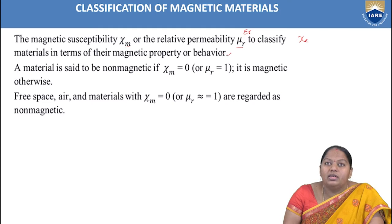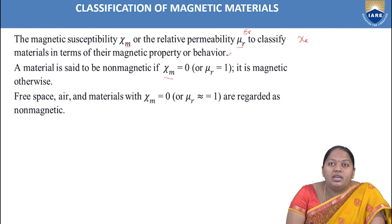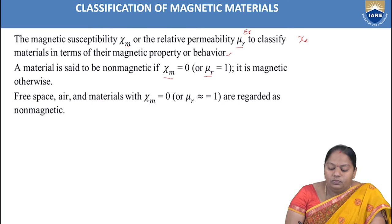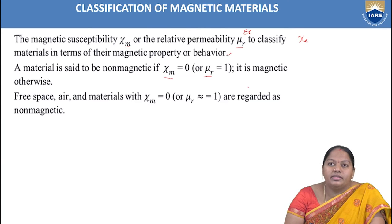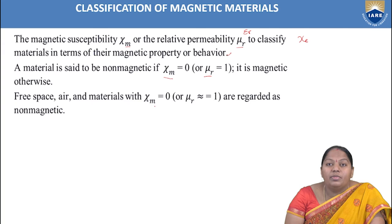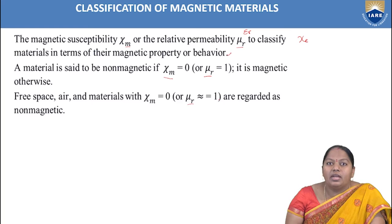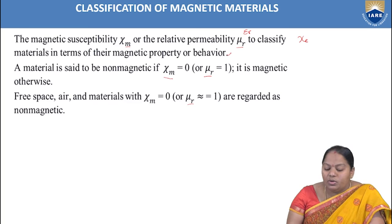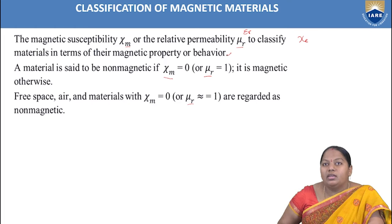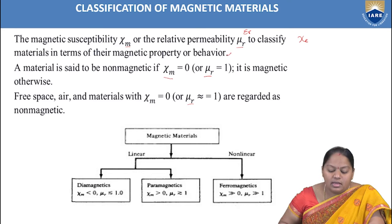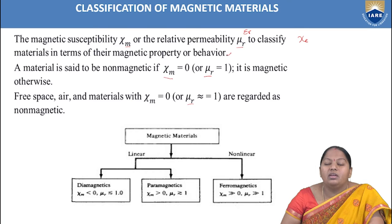A material is said to be non-magnetic if magnetic susceptibility χM equals 0, or relative permeability μR equals 1; otherwise it is magnetic. Free space or air and materials with χM equal to 0 or μR approximately equal to 1 are regarded as non-magnetic.